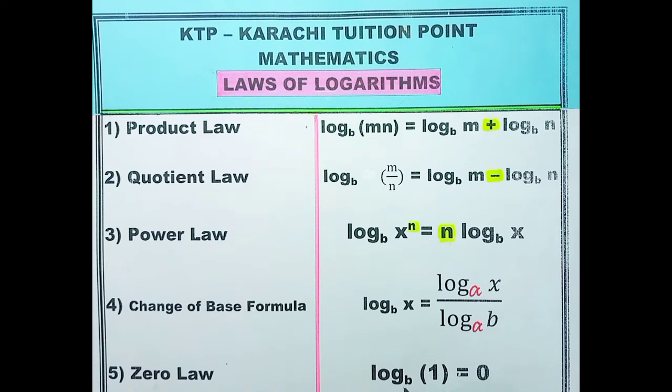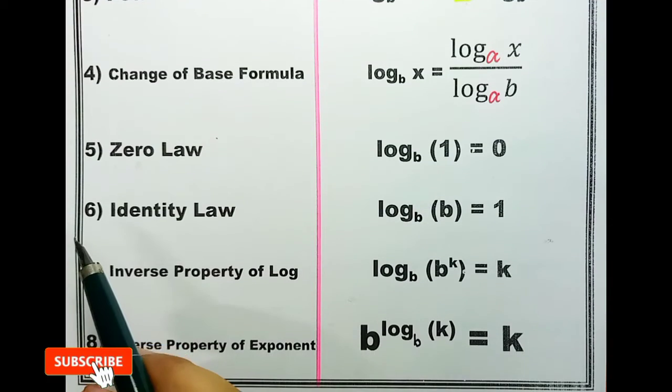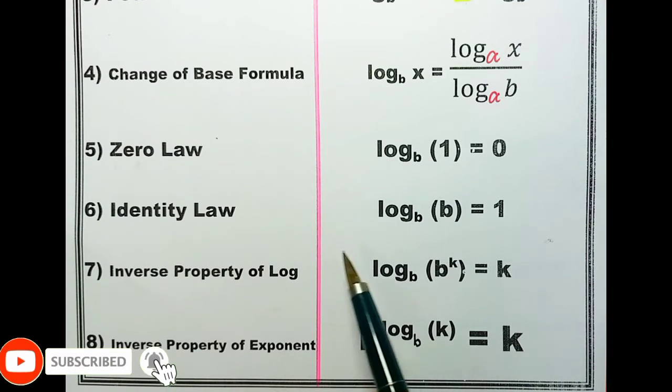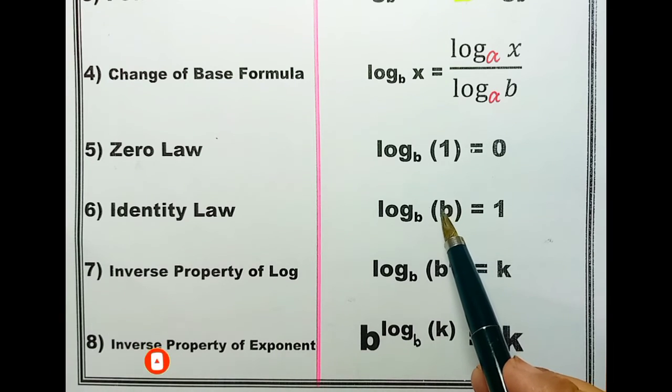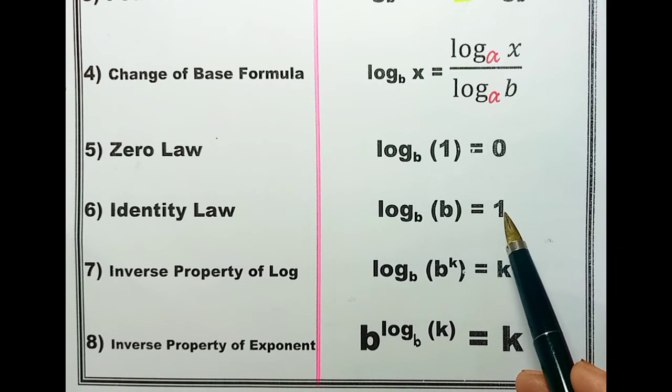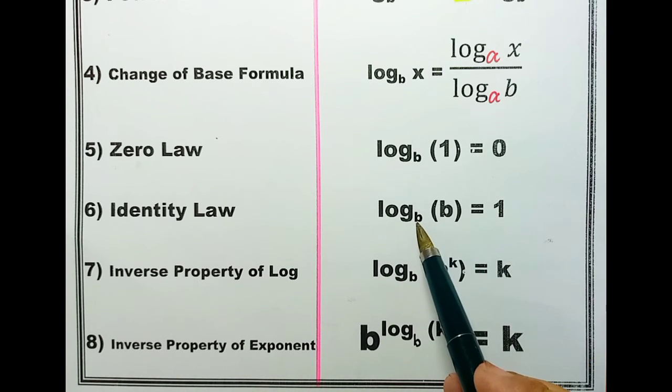As you can see here. Law number 6 identity law. Students you can see that the base and the argument are same. Whenever base and argument are same, the result is always one. But remember, base must be positive.